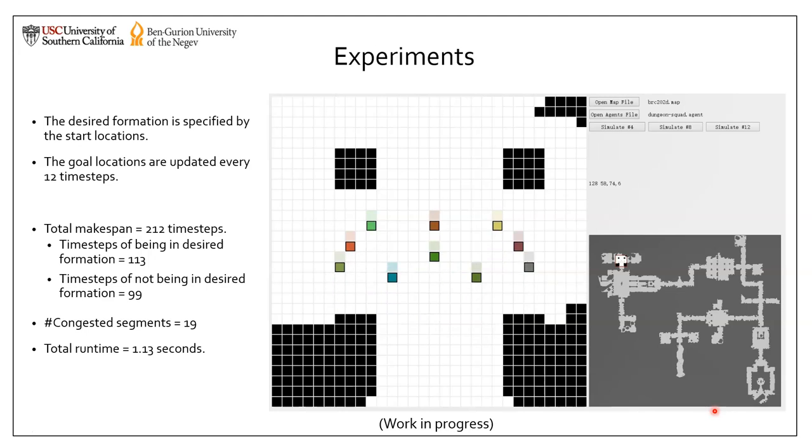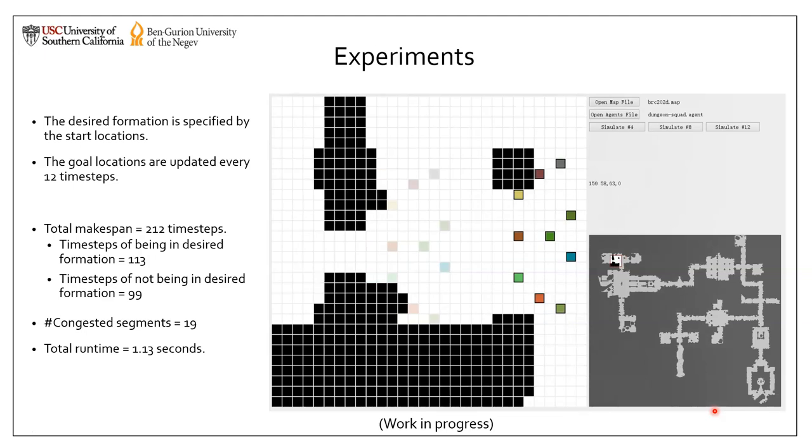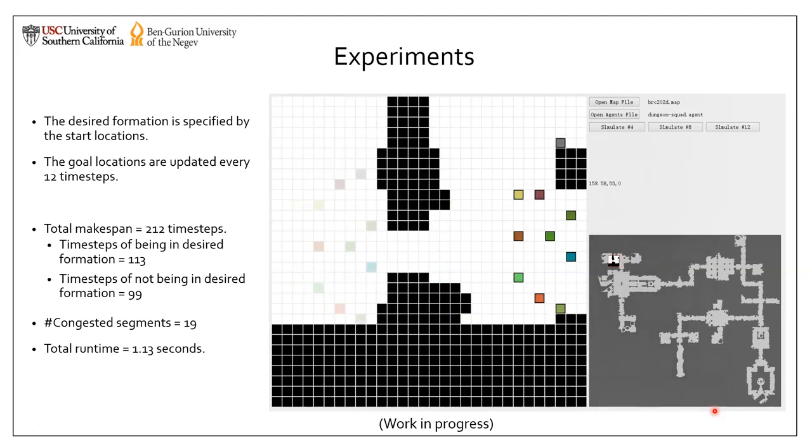We find 19 congested segments in total, and it takes us 1.13 seconds to plan these paths.